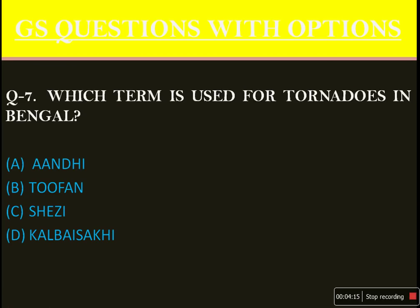Which term is used for tornadoes in Bengal? People from Bengal who know Bengali can translate this: Kalbaisakhi. Kalbaisakhi is the dead month falling between April and May. Kalbaisakhi refers to what we call a type of devil or storm. So it is Kalbaisakhi, option D.